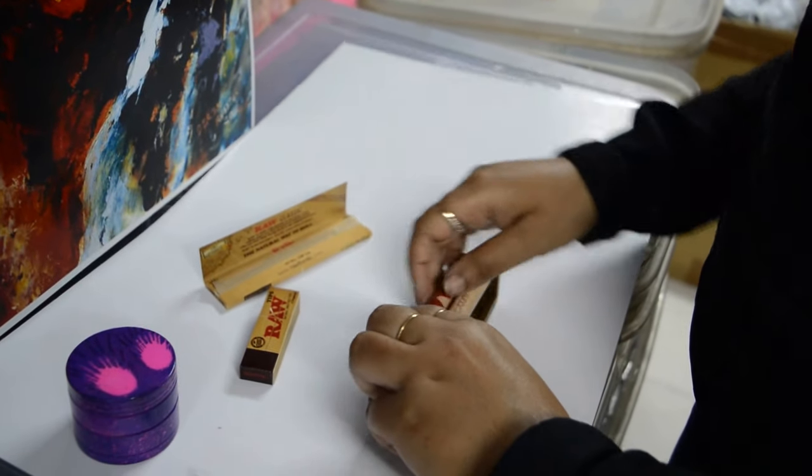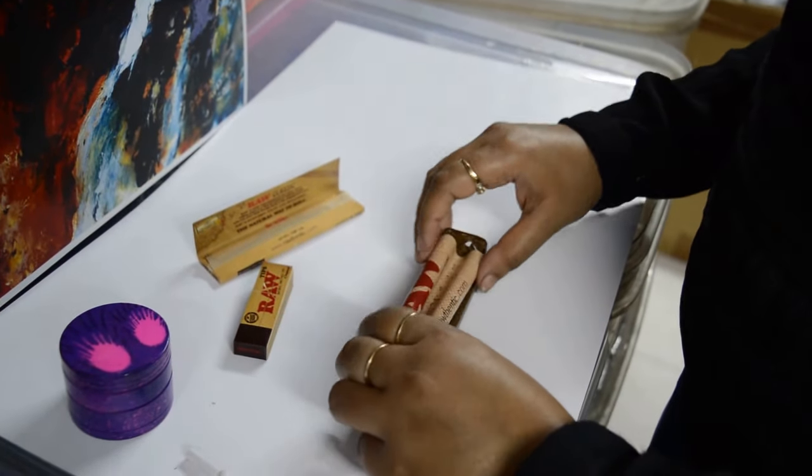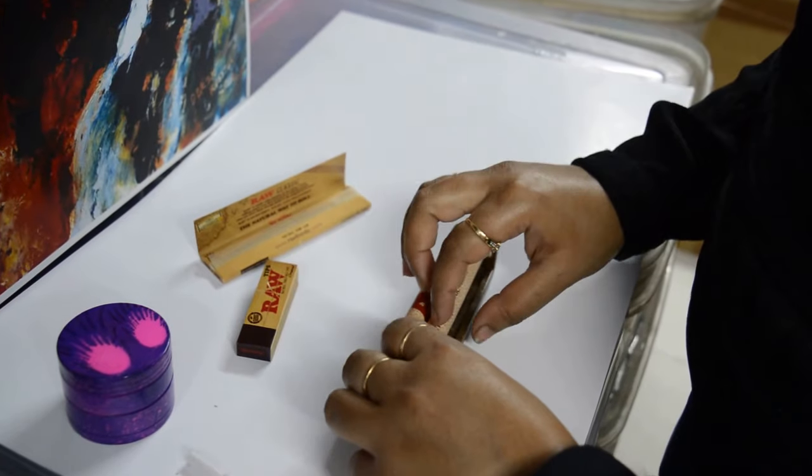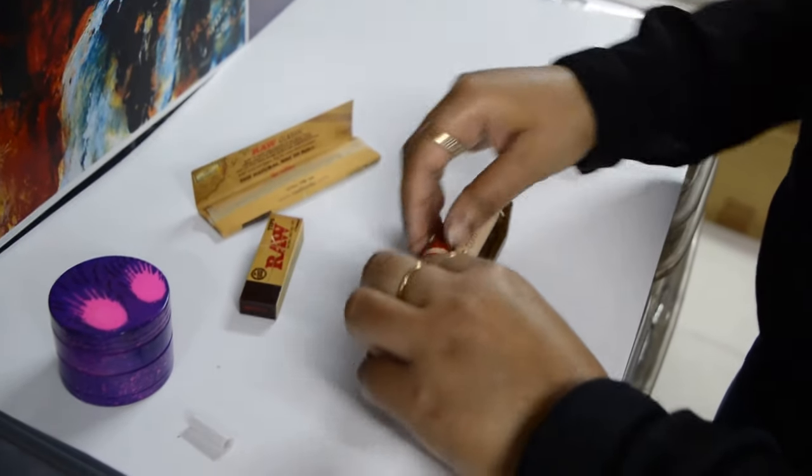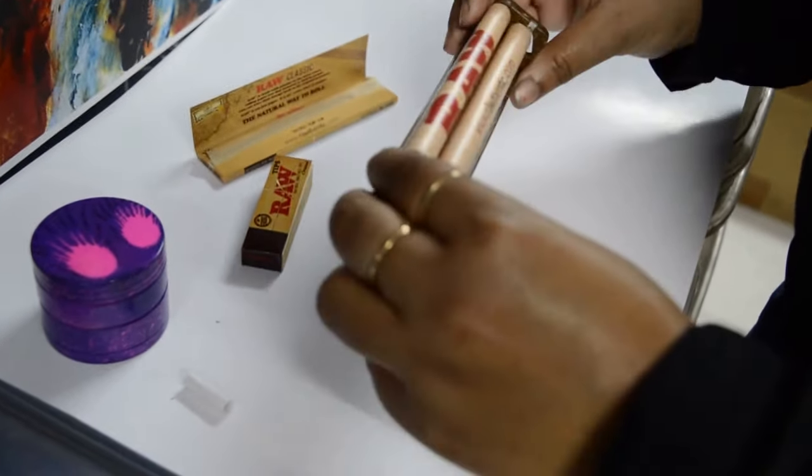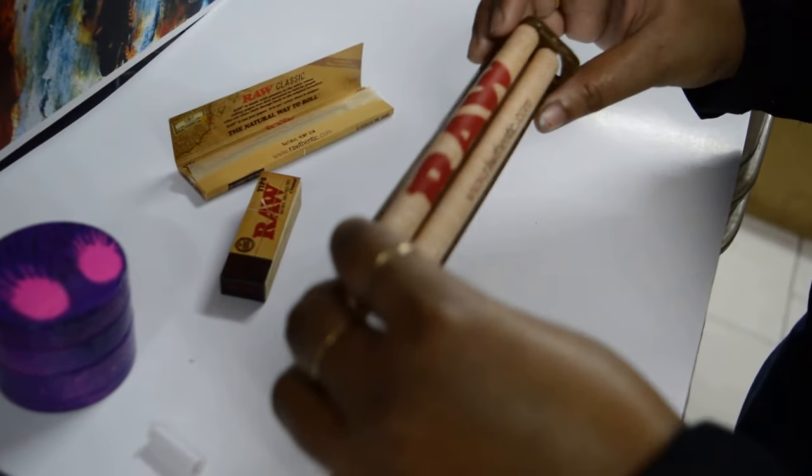Hello everyone, Little Goa is here again. Today we are going to make cigarette by raw cigarette rolling machine. It is a cigarette rolling machine of raw company.